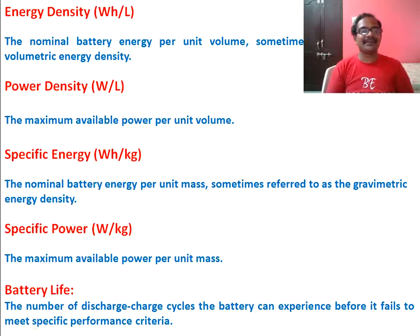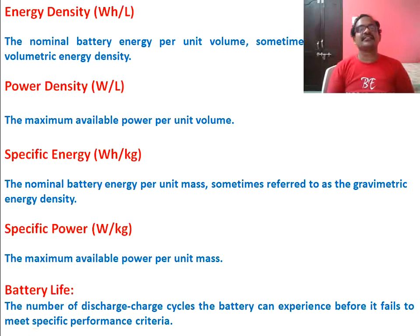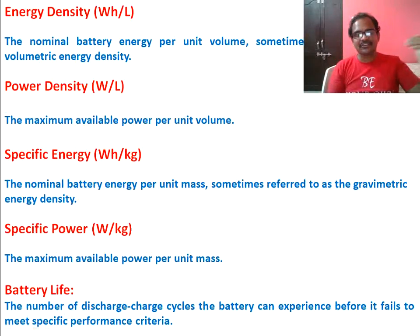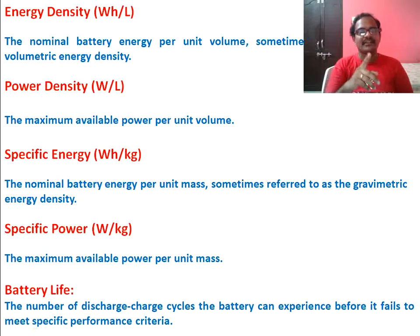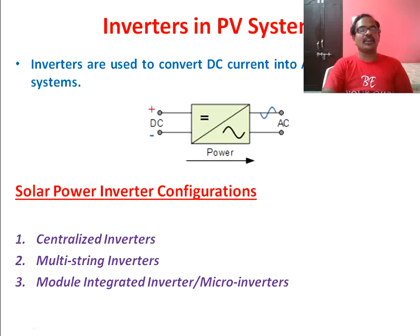One more important parameter is battery life, expressed in terms of charge and discharge cycles. Battery life is the number of charge and discharge cycles a battery can experience before it fails to meet a prescribed performance criterion. For example, if a manufacturer specifies 10,000 cycles, the battery can be charged and discharged 10,000 times — one charge plus one discharge equals one cycle.